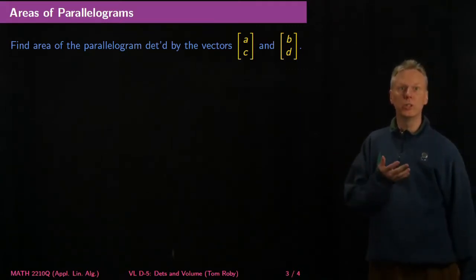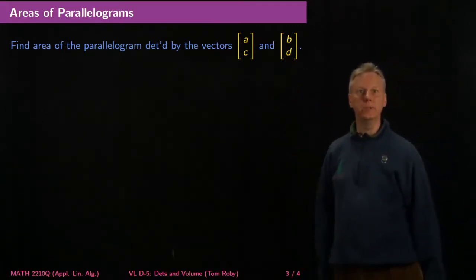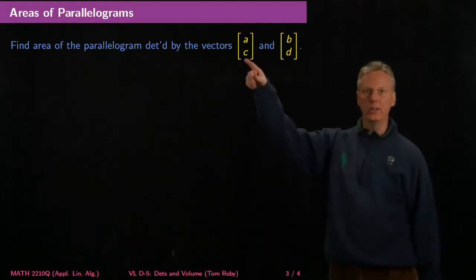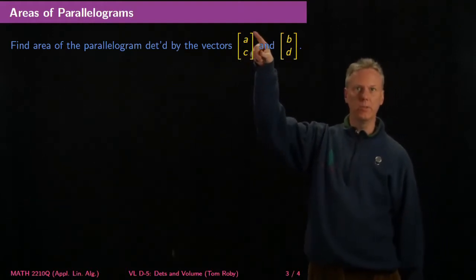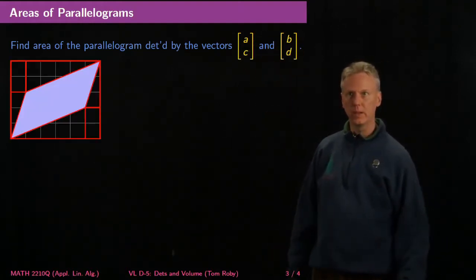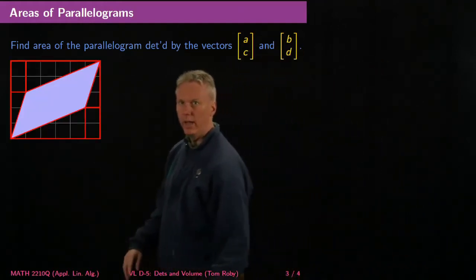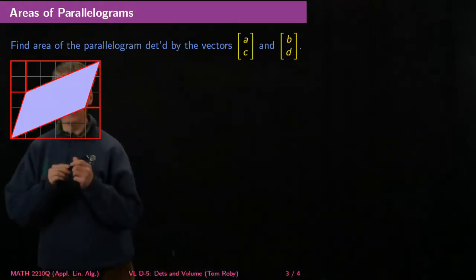just in R2, determined by two vectors, which I'll call A, C and B, D. You can think of them as the columns of the matrix [A, B; C, D]. So let me draw a picture here and let's see what we can do.